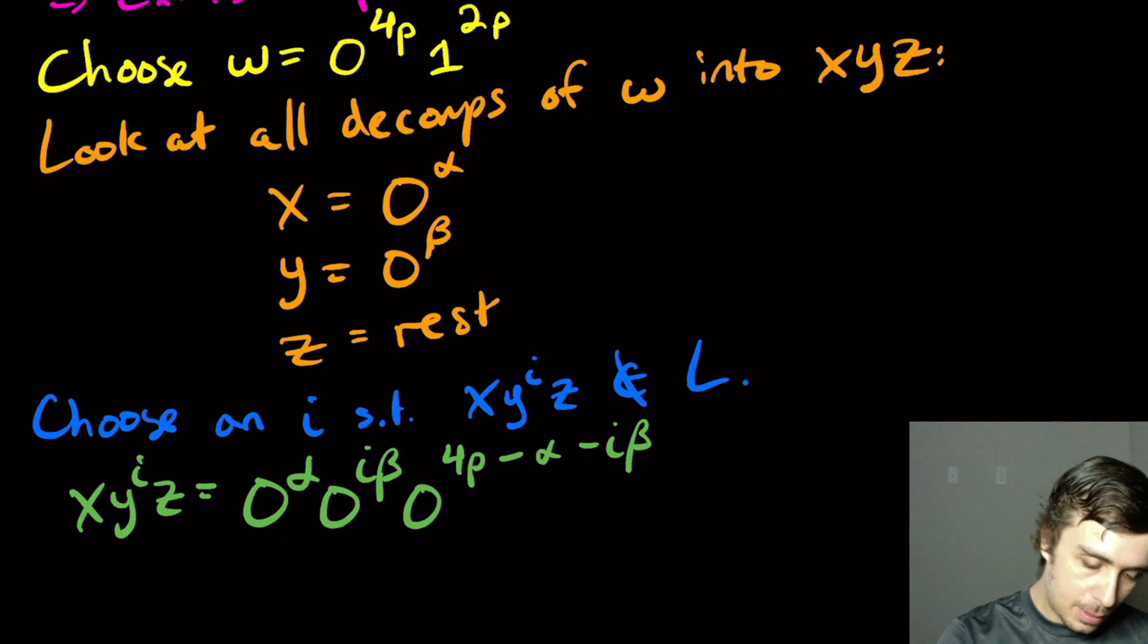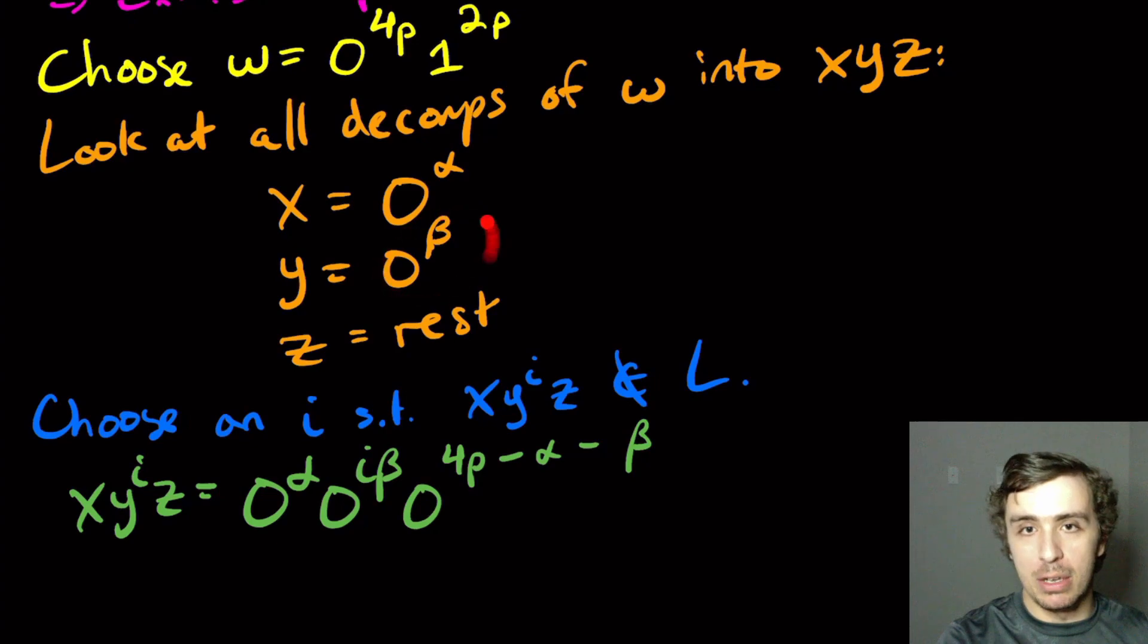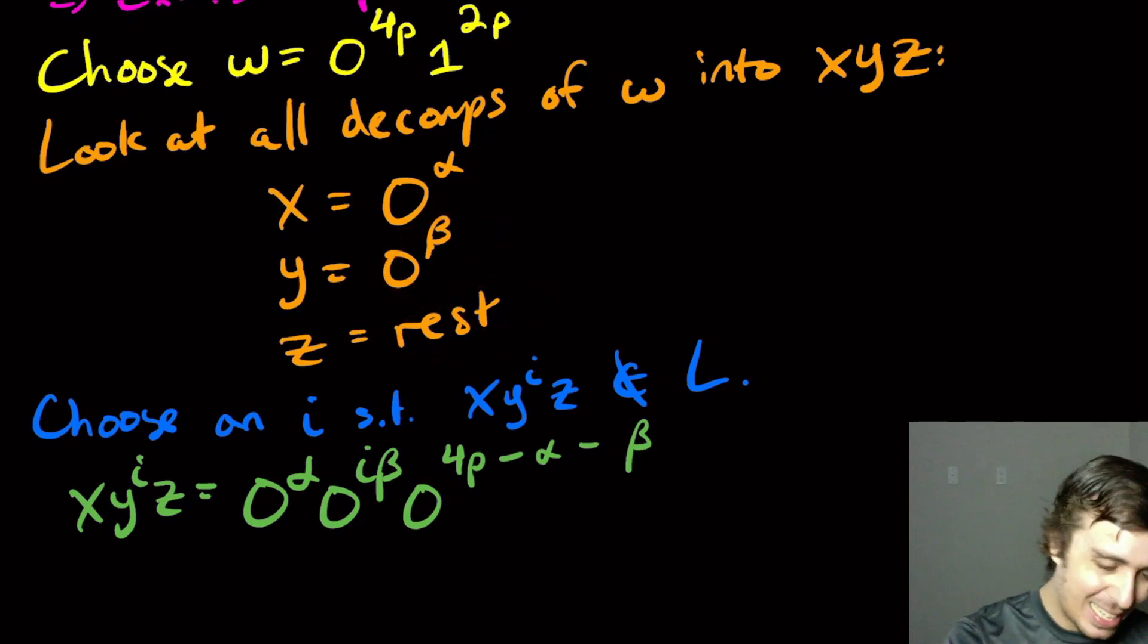It's not i beta. Sorry. It's 4p minus alpha minus beta, because that's what the y part had. I really should have done that. And then we have a 1 to the 2p there.